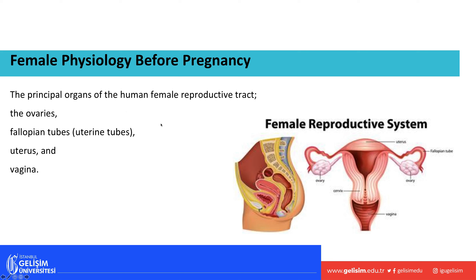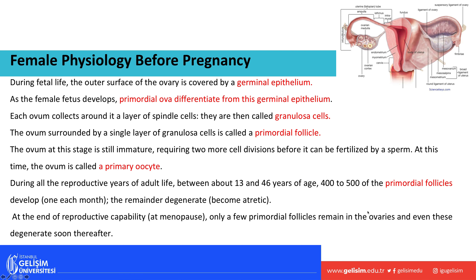Moving to female reproduction — the main organ of the female reproductive tract is the ovaries, equivalent to the testes in males. Females also have the fallopian tubes, also called uterine tubes, the uterus, and the vagina. During fetal life, the outer surface of the ovary is covered by the germinal epithelium, which differentiates into primordial ova.